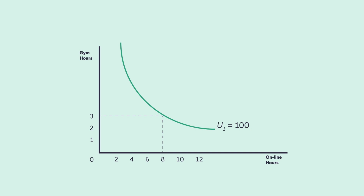The indifference curve reveals that Weston must accrue four additional hours of online time just to remain indifferent. Why? Because the number of gym hours each week is small compared to the number of online hours. At this combination of three gym hours and eight online hours, diminishing marginal utility implies that the added utility from one more online hour is smaller than the lost utility from one less gym hour. For Weston to remain indifferent between the two consumption bundles, more than one online hour is needed to make up for the lost gym hour.